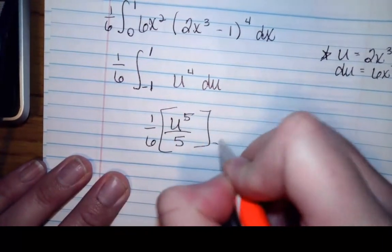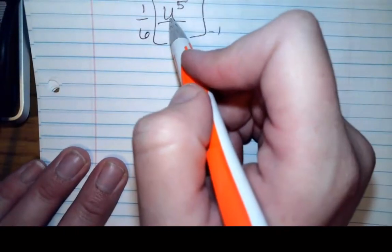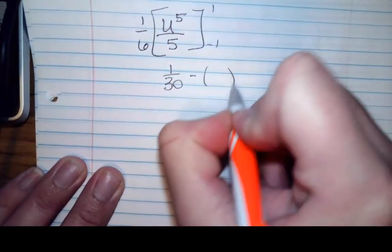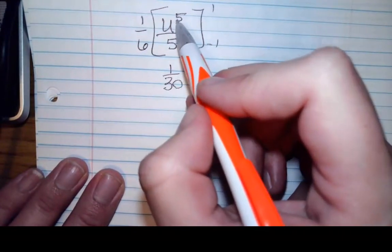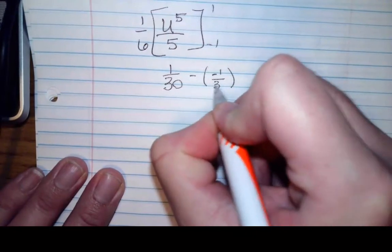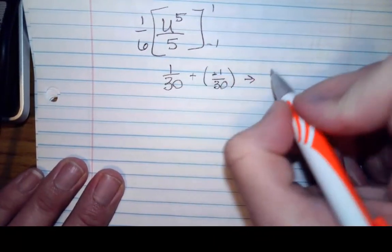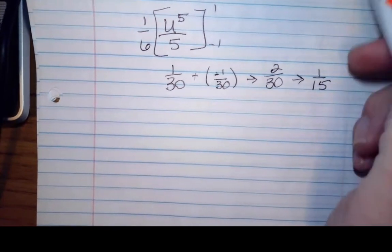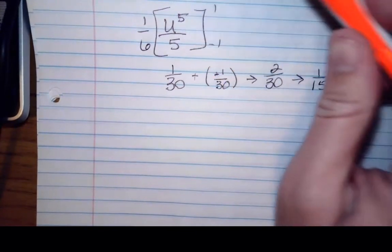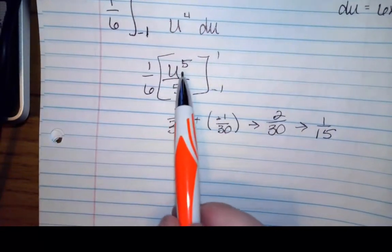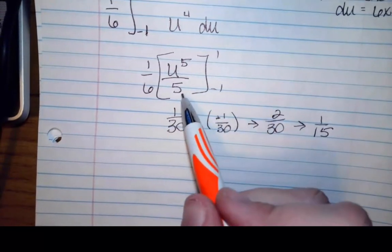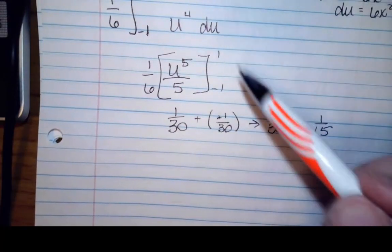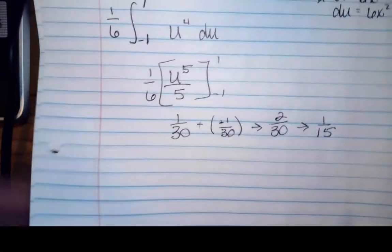Integrating gives u to the fifth over 5 times one-sixth, evaluated from negative 1 to 1. Evaluating at 1: 1 to the fifth is 1 over 30. Evaluating at negative 1: negative 1 to the fifth is negative 1 over 30. So I get 1 over 30 minus negative 1 over 30 = 1 thirtieth plus 1 thirtieth = 2 thirtieths = 1 fifteenth. As long as we're pushing everything into u-world, it's easier to move the limits there too.